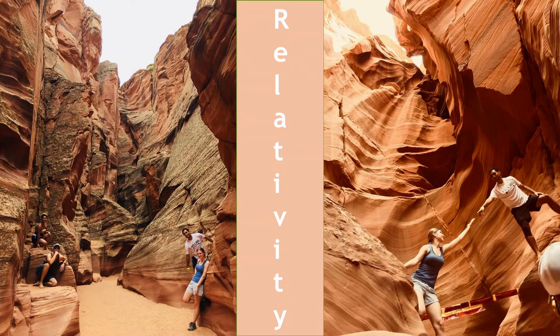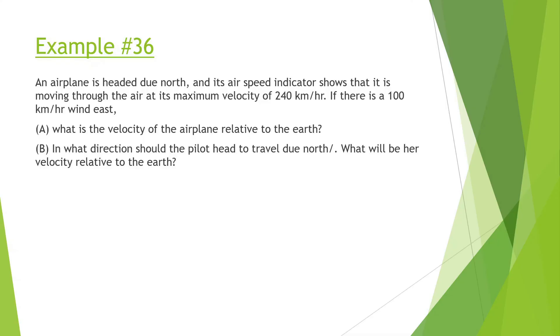All right everyone, today we're going to be talking about relativity — how depending on your frame of reference, things can appear differently. Let's look at this example: an airplane is headed due north and its airspeed indicator shows it is moving through the air at its maximum velocity, 240 kilometers per hour. If there is a 100 kilometer per hour wind to the east, what is the velocity of the airplane relative to the earth?